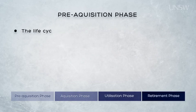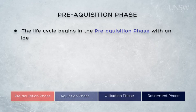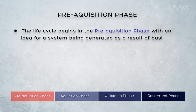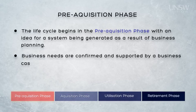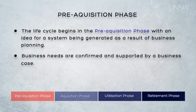The life cycle begins with the pre-acquisition phase, with an idea for the system being generated as a result of business planning. The early needs of the business are confirmed and they're supported by a business case, which justifies expenditure of organisational resources on the acquisition of the system. In some instances, the pre-acquisition phase may determine that it might not be feasible or cost-effective to proceed to acquisition, for example due to technology limitations or funding shortfalls.